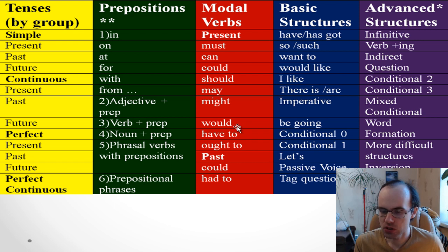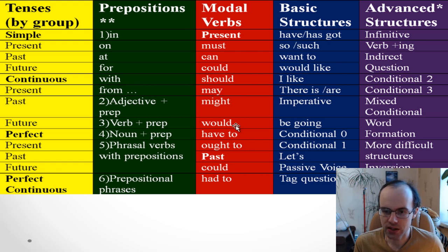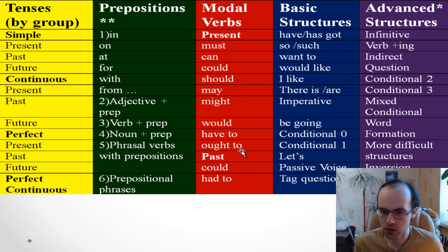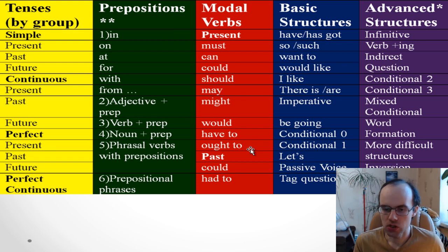'Would' — 'I would do it' means it's possible, it's a good idea. Remember also 'I would like' or 'I'd like to do it.' 'Have to' is like 'must' but driven by external factors: 'I have to get up very early.' 'Ought to' is like 'should' but more formal: 'You ought to wear a uniform,' 'You ought to write this report' — it sounds very formal.